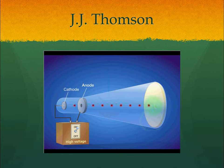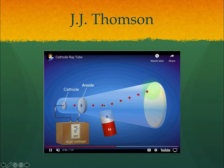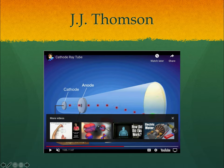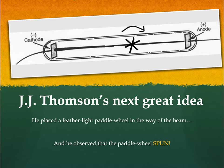Thomson then did the same thing but applied a magnet. When he applied the magnetic field, the beam was also forced to bend. If the positive pull of the magnet attracted the beam and the negative pull deflected it, that confirmed the beam was negatively charged. He also placed a paddle wheel — like a pinwheel — in the middle of the cathode ray tube, and when the ray traveled from cathode to anode, the wheel spun, showing that the beam has mass.